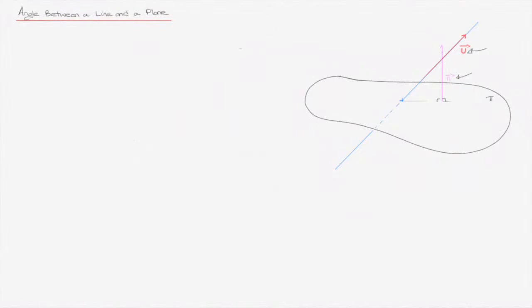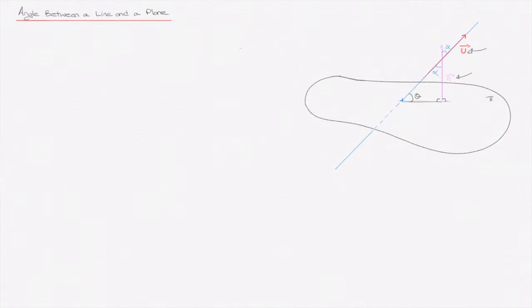What we're trying to find is the angle between the line and the plane, which we'll call theta, as drawn in the diagram. The approach to finding theta isn't to calculate it directly. The idea is to find the other internal angle, which I'm calling alpha, in a right-angle triangle highlighted here. We can see that right-angle triangle, and alpha also appears there. Alpha and theta are related by the formula: theta equals 90 minus alpha.